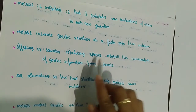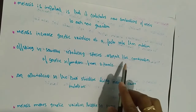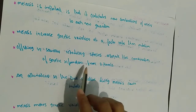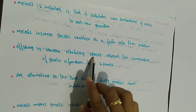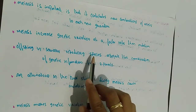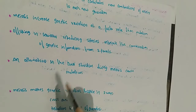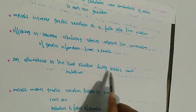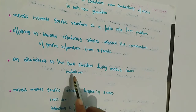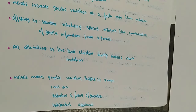Offspring in sexually reproducing species represent the combination of genetic information from two parents. An alteration in the DNA structure during meiosis can cause mutation, which involves the passing of genetic characters from one generation to another.